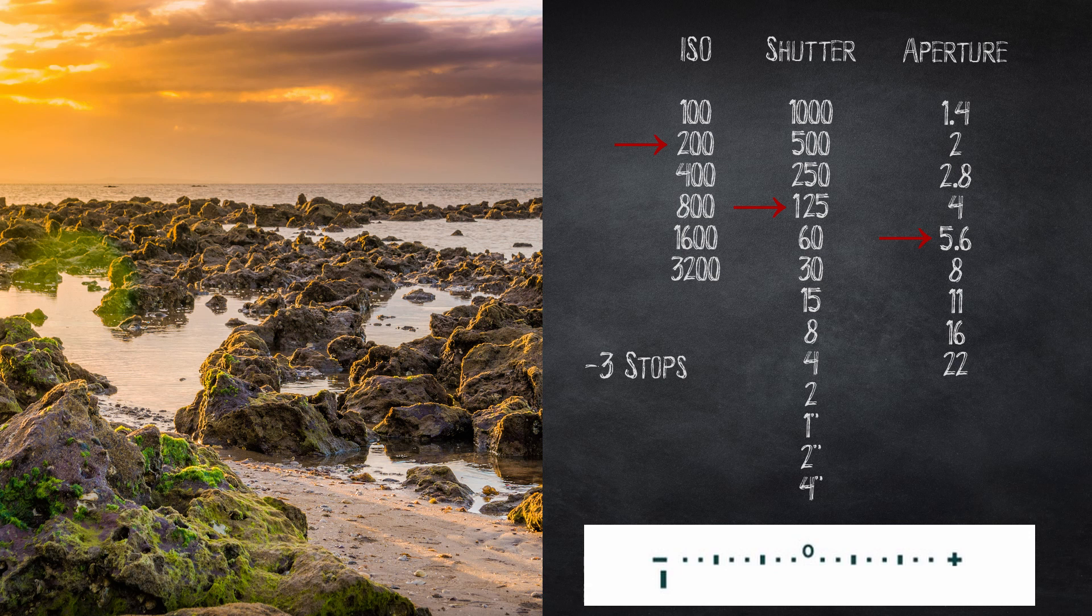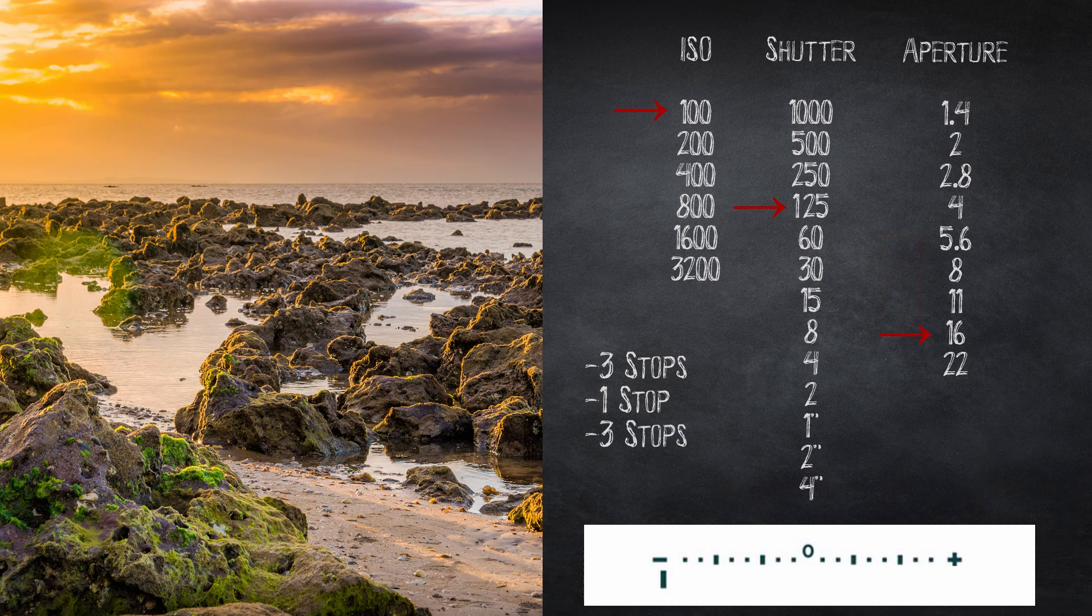Since we want a clean landscape image with everything in focus, let's start by dropping the ISO to 100 which loses us a stop of light, and closing the aperture down to f16 which loses yet another three stops of light. So now we are seven stops underexposed.